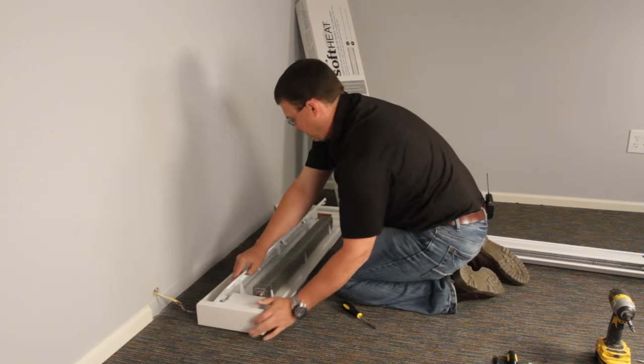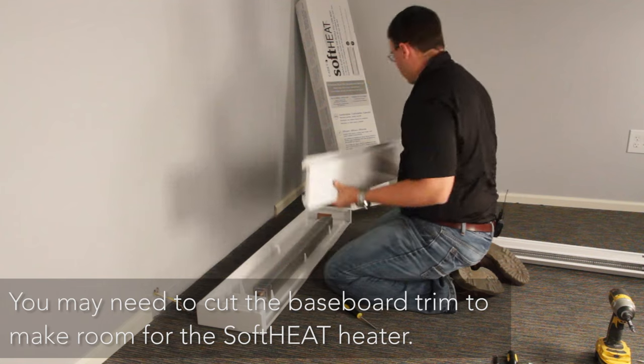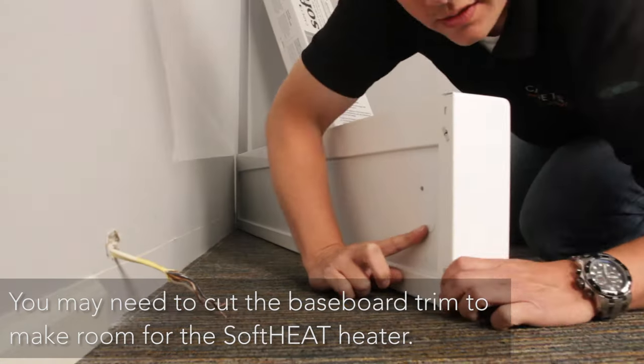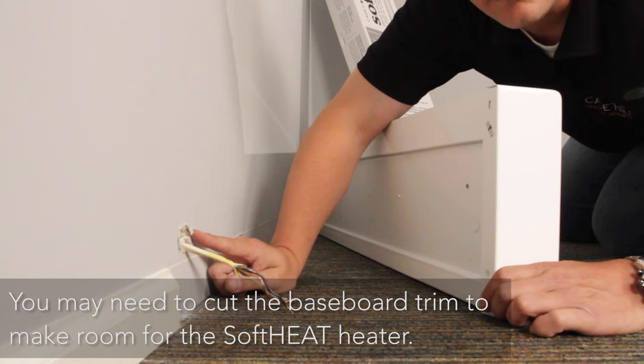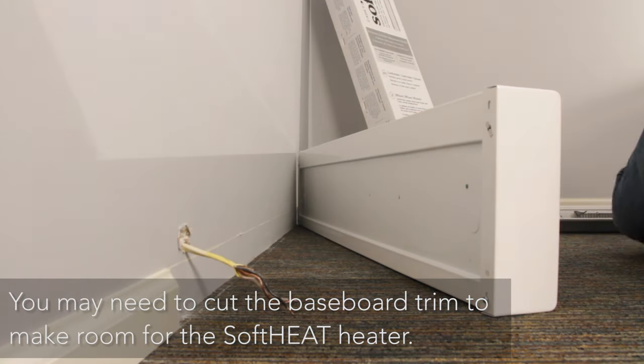Now you're ready to install the soft heat heater. Pull up and pull out on the cover to remove it. You'll probably notice that the knockout holes on the new soft heat line up with the wiring coming out of the wall.